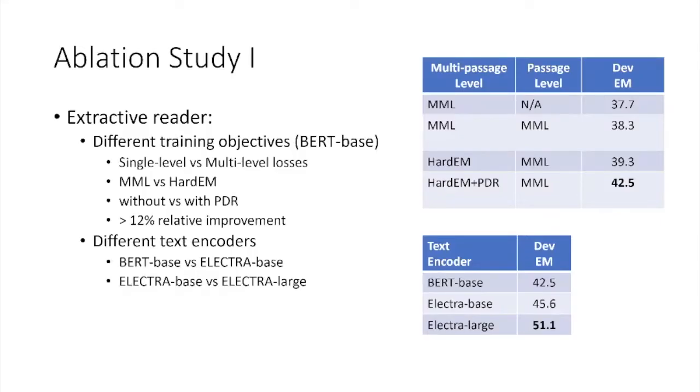Here, we first present the ablation study over training strategies for the extractive reader. As we can see from the top right table, by using the proper training objective, there is a large improvement over the standard baseline. Based on the bottom table, we find that textual representation is critical for end-to-end performance. Not surprisingly, a large model can lead to further improvement over its base counterpart.